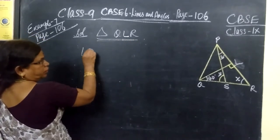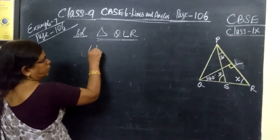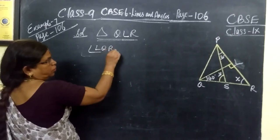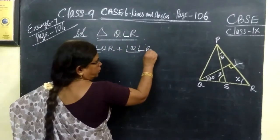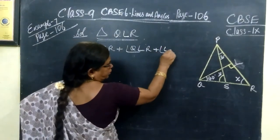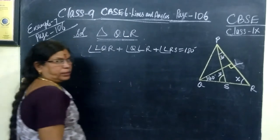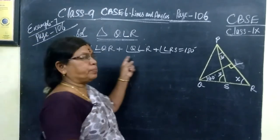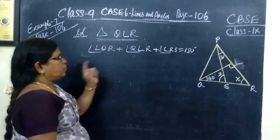You know angle LQR plus angle QLR plus angle LRS equals 180 degrees. We just learned the angle sum property of a triangle: the sum of these three angles is 180 degrees.